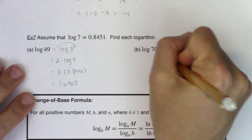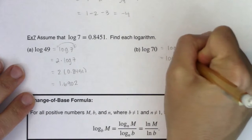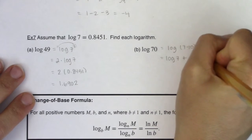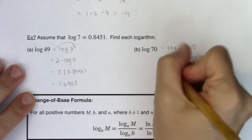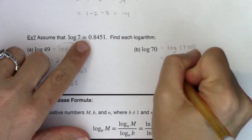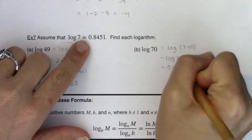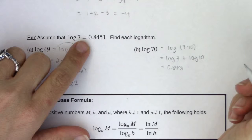When my argument is a product, I can turn this into the sum of logarithms, and I was given log of 7. That was 0.8451, and I happen to know log base 10 of 10.